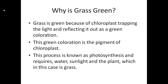So why is grass green? It is this color due to chloroplast, which is a green pigment. The chloroplast traps light and reflects it internally, resulting in the reflection of a green coloration. This process is known as photosynthesis and requires water, sunlight, and the plant, which in this case is grass.